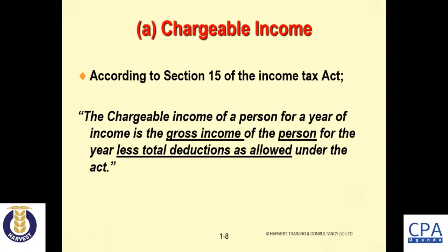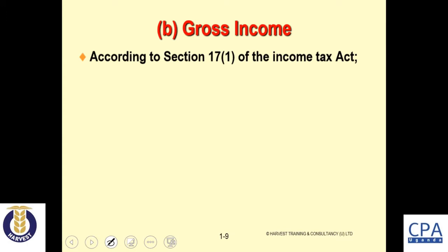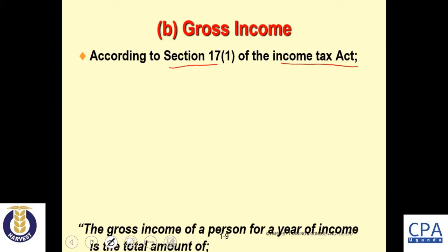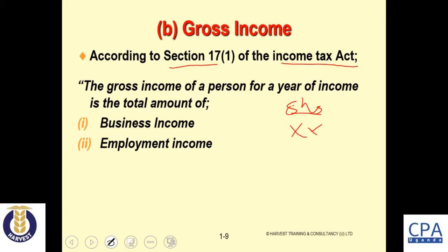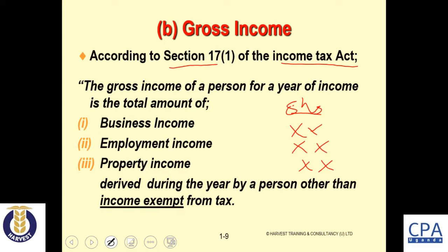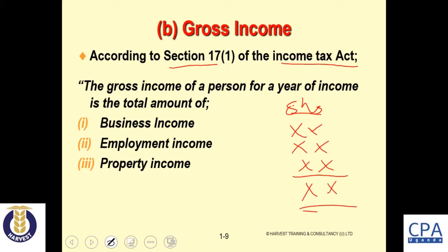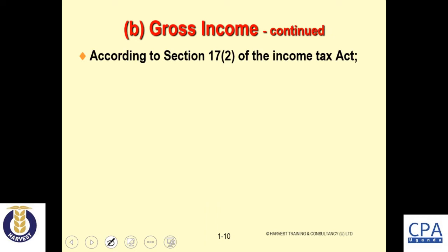According to Section 17 of the Income Tax Act, gross income refers to the total amount of taxable income — including business income, employment income, and other income derived during the year by a person — other than income exempt from tax. Adding all these together gives us our gross income.